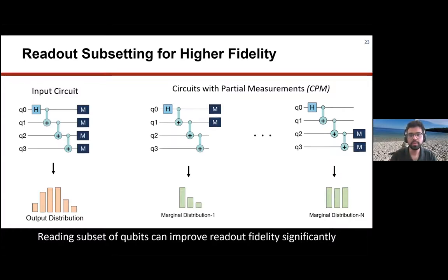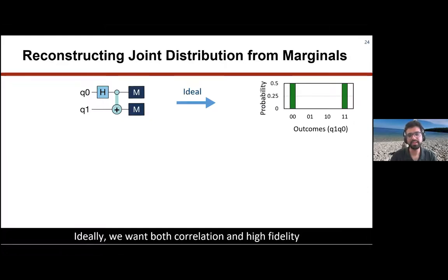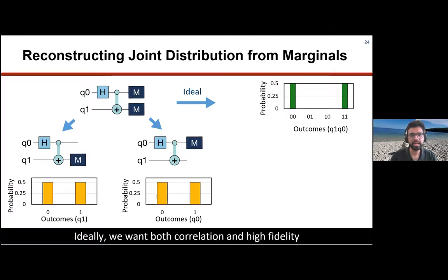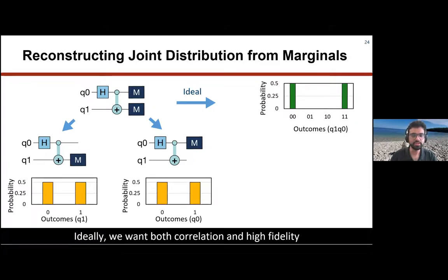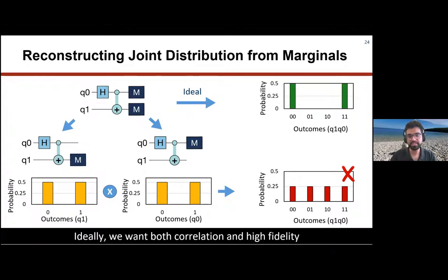But there is a challenge: if we are evaluating marginals or reading partial qubits, then we need to reconstruct the joint distribution, and that's hard. For example, consider creating a Bell pair and measuring it in subset mode. We can get one-qubit marginals, but if we just do a tensor product, it gives us a completely wrong answer. We want higher fidelity, but we also want the correlations exhibited by the original circuit. So is there a way we can get both?